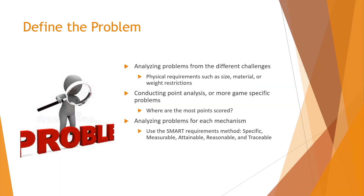The first step our team takes in the engineering process is to identify the problem. Identifying the problem can include analyzing problems from different challenges and requirements needed to be successful in the game. It is important to analyze different problems or requirements such as the physical requirements of the robot — size, material, or weight restrictions — conducting point analysis, or more game-specific problems such as possession limit of game elements.